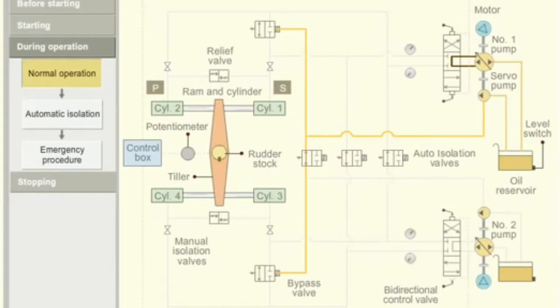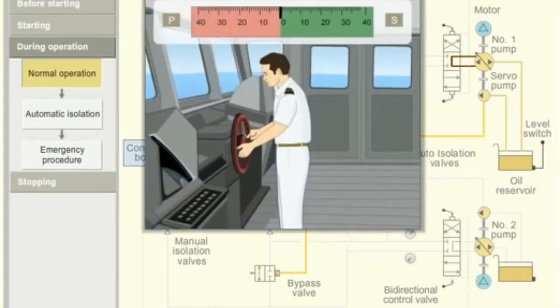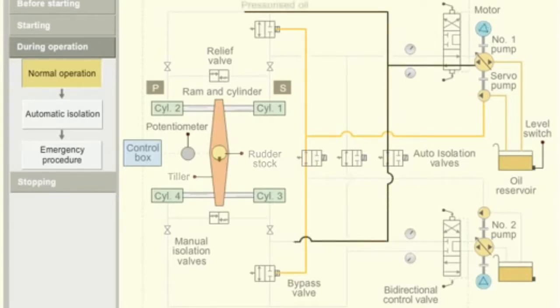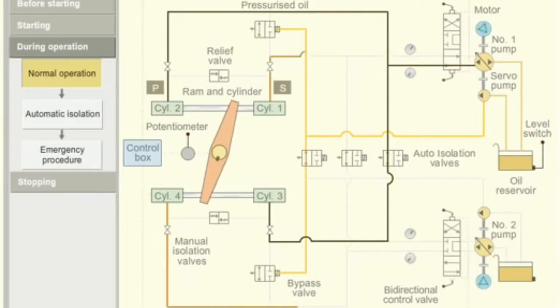When port order is given from the bridge, the control box sends a signal to the bi-directional control valve that moves to the forward side. Pressurized oil is pumped into ram 2 and 3. The pressurized oil moves the ram. The tiller in turn moves the rudder stock from midship to port position. The return oil from ram 1 and 4 flows back to the pump return side.